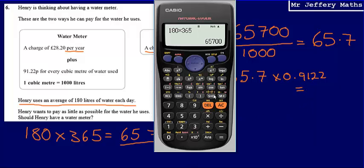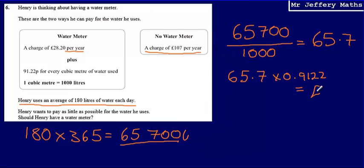So that is going to give me an answer of 65.7 multiplied by 0.9122. So that's going to be 59 pounds. We'll call that £59.93. So he's going to have to pay £59.93.